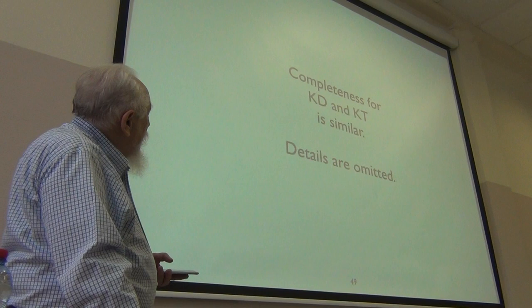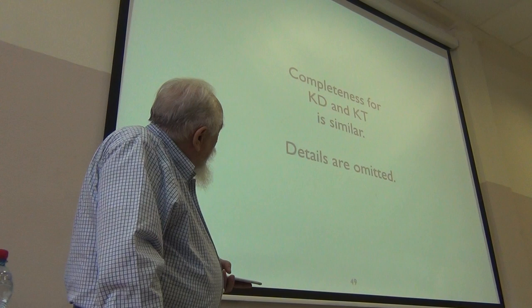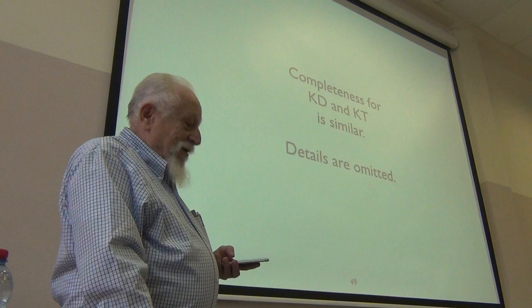Alright. So that gives you completeness for QK. And in the same way, you can get completeness for... It says KB and KT. It should be QB and QT. Alright. So what about four...